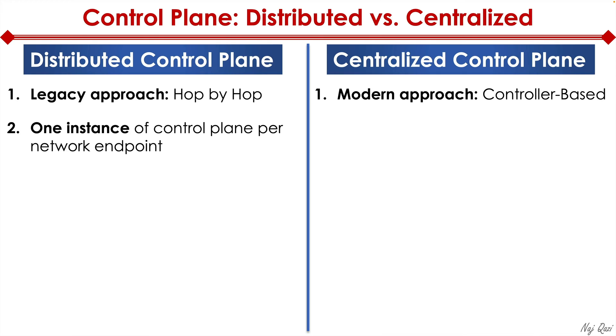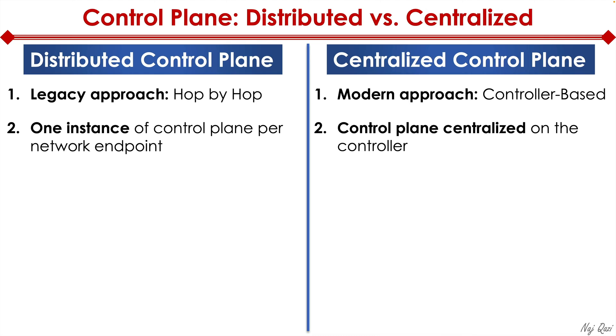With a distributed control plane, there's one instance of the control plane per network endpoint, whereas in a centralized model, the control plane is centralized on the controller.